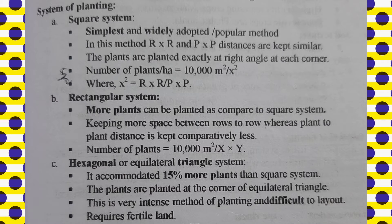The next one is the rectangular system. Unlike the square system, the row-to-row and plant-to-plant distances are different. The row-to-row distance is more compared to plant-to-plant distance. The number of plants is calculated as 10,000 m² divided by x times y.